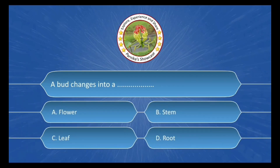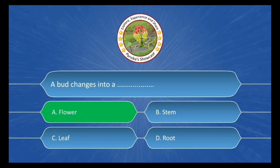Next question: A bud changes into a ___. The options are: A. Flower, B. Stem, C. Leaf, D. Root. The correct answer is Option A: Flower.